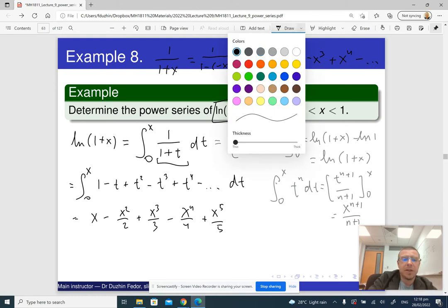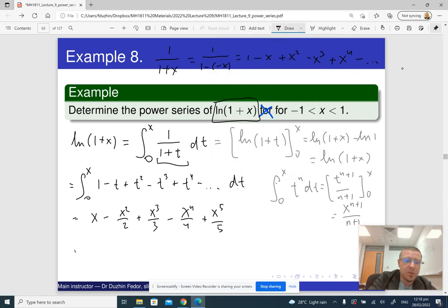So that's basically the answer, but if you want to write it in a more compact form, you can do it. This is the sum from n=1 to infinity. Notice that it starts, the power starts from 1. x raised to the power n divided by n. And there is also (-1) raised to the power... if I wrote n, then the first term would be negative. So I should write (n+1) and minus 1 instead.